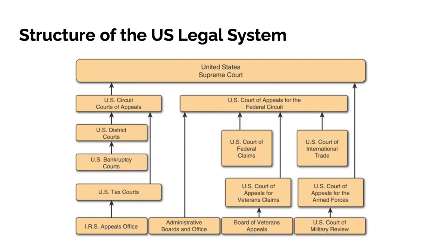The burden of proof is always on the prosecution. We have the appeals courts. These courts enable citizens to appeal a conviction, deciding whether to hear an appeal. Appeals are not trials — a panel of judges renders a decision whether a mistake occurred in a lower court.